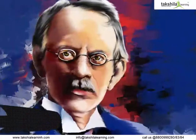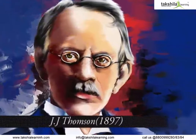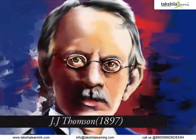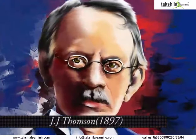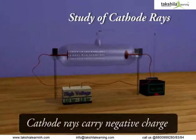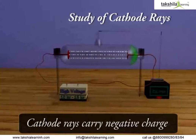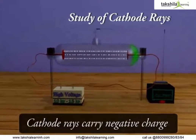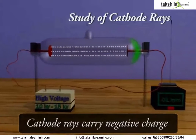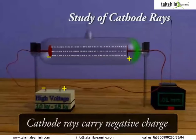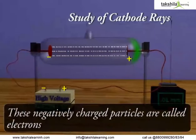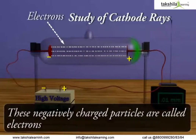In 1897, J.J. Thomson discovered the cathode rays. On studying various properties of cathode rays, it was observed that cathode rays carry negative charge. These negatively charged particles are called as electrons.